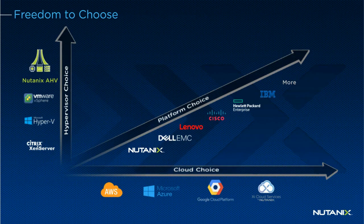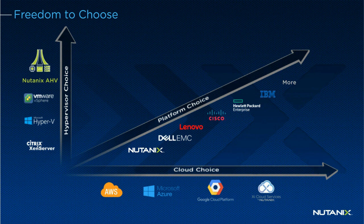What's unique about Nutanix is we're not trying to lock you into any singular platform. We support VMware, Hyper-V, Citrix XenServer, and our own hypervisor called Nutanix AHV, which is based on KVM — the same hypervisor that AWS uses for all of their compute. We also support hybrid cloud capabilities with AWS, Azure, and Google Cloud, plus native cloud services through Xi, our multi-cloud suite. In terms of hardware, you can run Nutanix on Supermicro, Dell EMC, Lenovo, IBM, Cisco UCS, and HP servers.